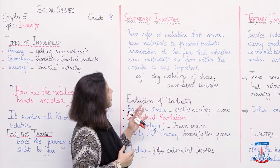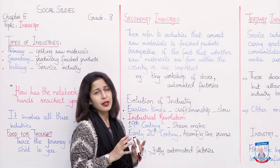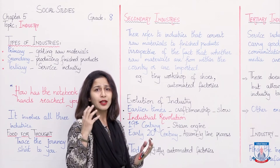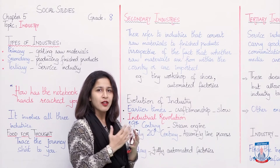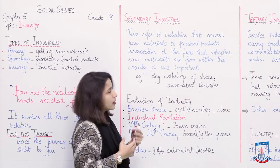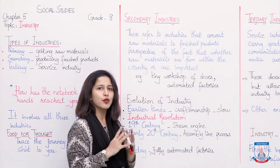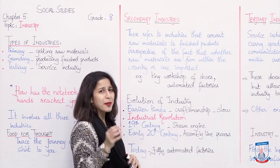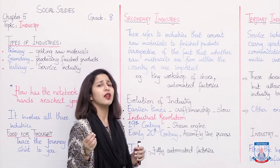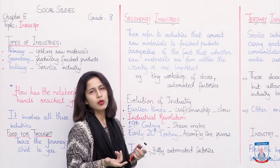Secondary industries refer to industries that convert raw materials to finished products, irrespective of the fact whether raw materials are from within the country or are imported. This industry converts and processes raw materials to make a finished good — just like in the example we saw, where a tree became paper and then a notebook. As a small example, even a workshop where shoes are made by hand stitching — using needle, thread, and leather by one person's craftsmanship — that is also a secondary industry.